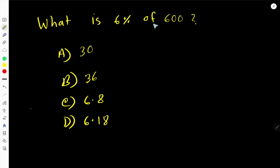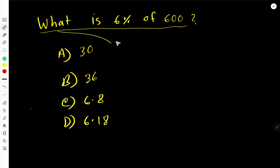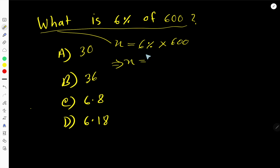What is 6% of 600? To solve this math problem, we need to translate the sentence. 'What' means X, 'is' means the equal sign, '6% of' means multiplication, and then 600. So: X = 6% times 600.